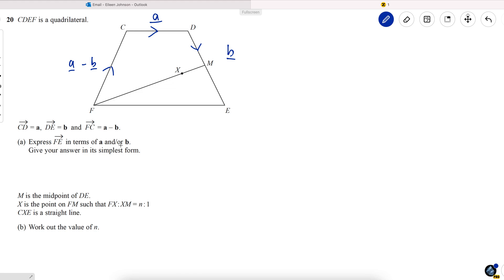Express FE in terms of A and or B. Give your answer in its simplest form. FE, we don't have a vector going from here to here directly, so we can go around this way and it's equivalent. A minus B plus A plus B. And there are two marks for this, so it's important to write all of this down to show where your 2A comes from.